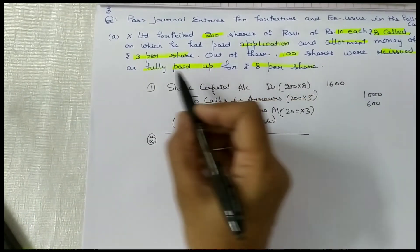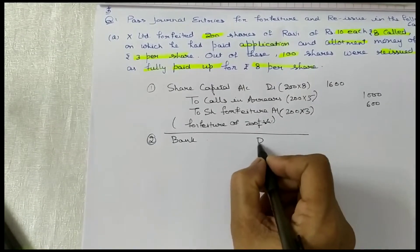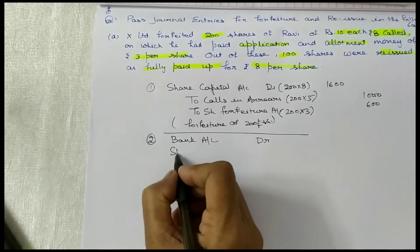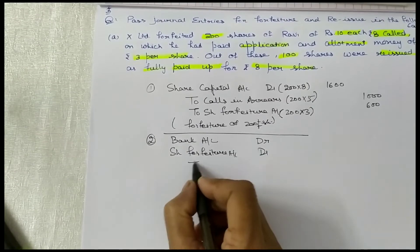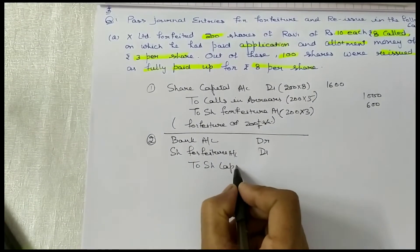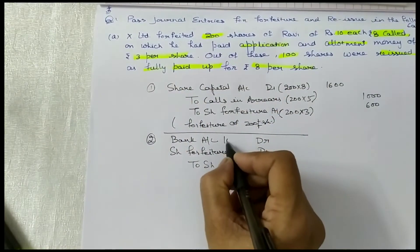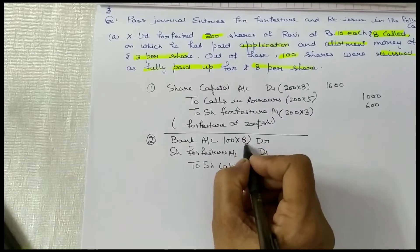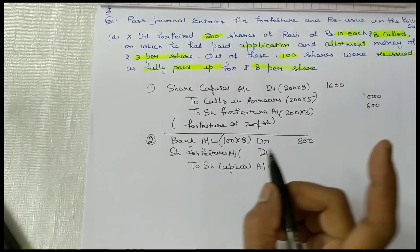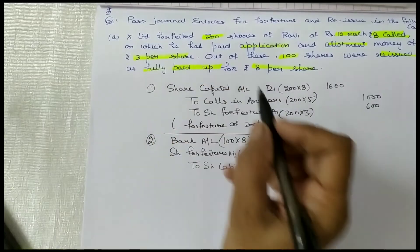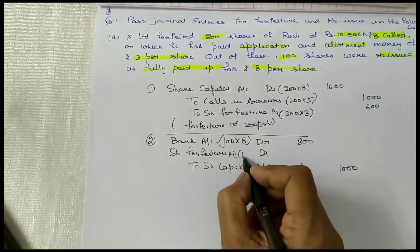The shares were reissued as fully paid up for Rs.8. Bank account is debited, share forfeiture account is debited, to share capital. Bank account: 100 shares were reissued at Rs.8 per share, so Rs.800. Share forfeiture: 1 share is of Rs.10 each and reissued at Rs.8 per share fully paid up, so you have to show 100 into 10, that is Rs.1,000, and 100 into 2, that is Rs.200.